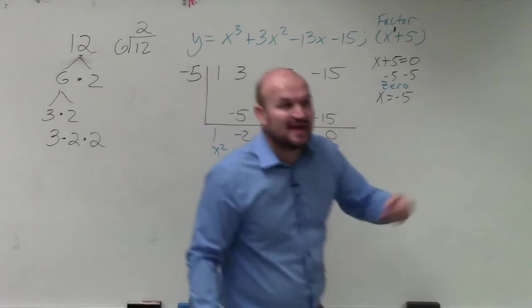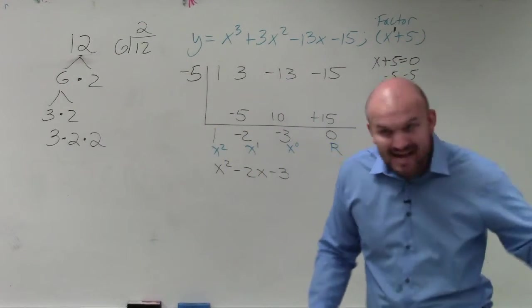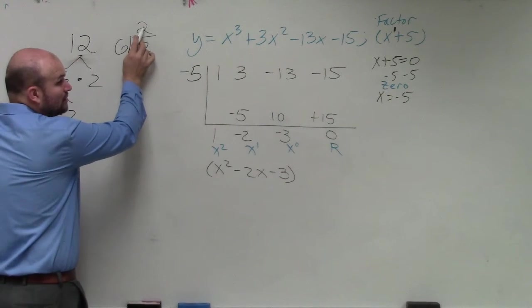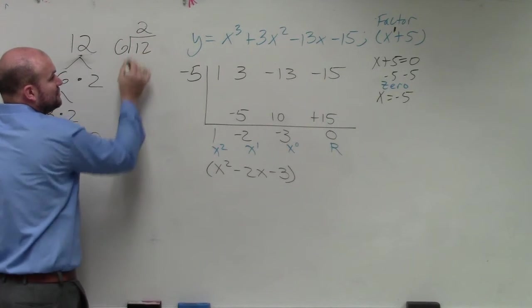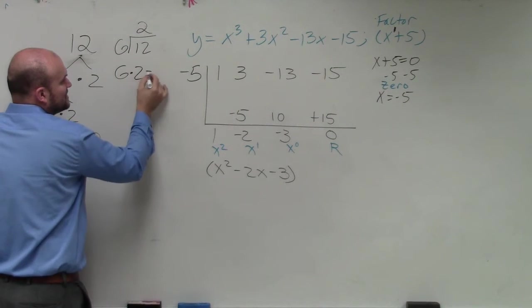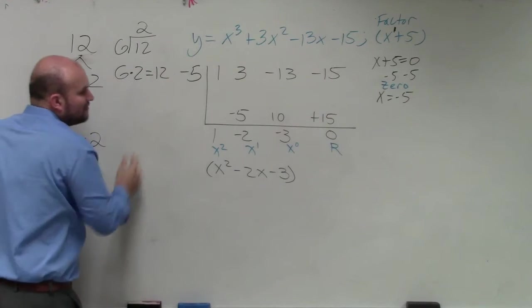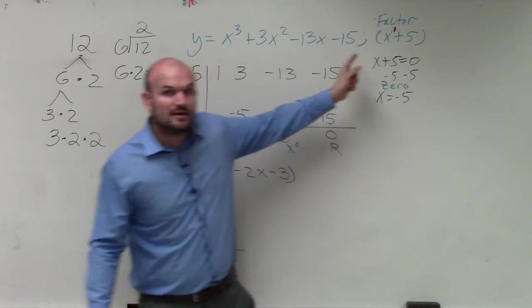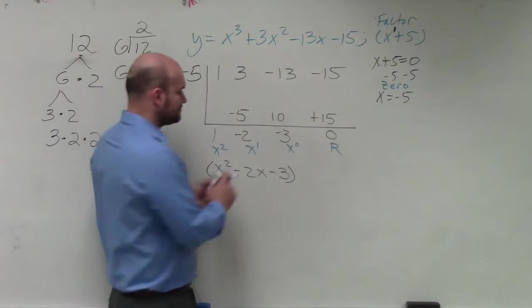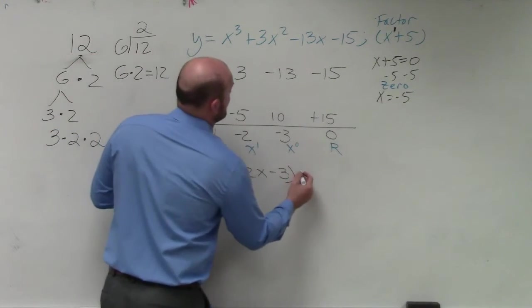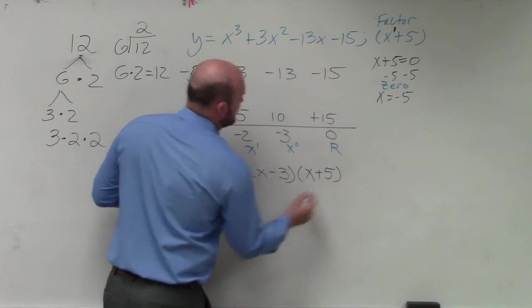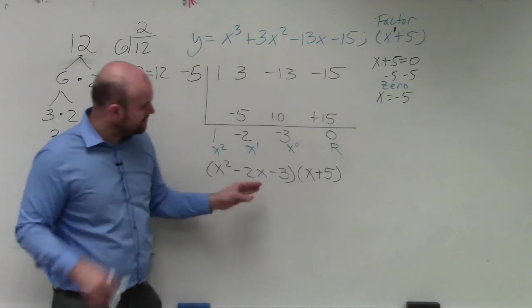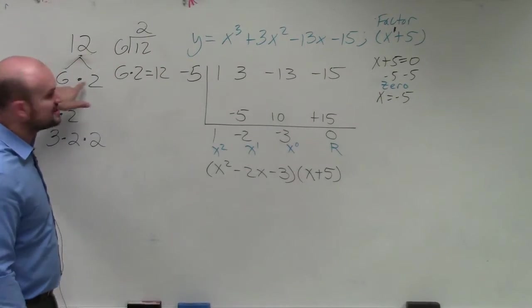But not only is that an answer, that is also a factor. Now think about it, if 6 divides into 12 two times, what happens when we multiply our two factors? What does that give us? 12. So if I multiply this factor by this factor, it's going to give us our polynomial back, right? So I multiply this times x plus 5, that gives you back your polynomial. However, so here's the factored form, just like how I factored 6 and 2.